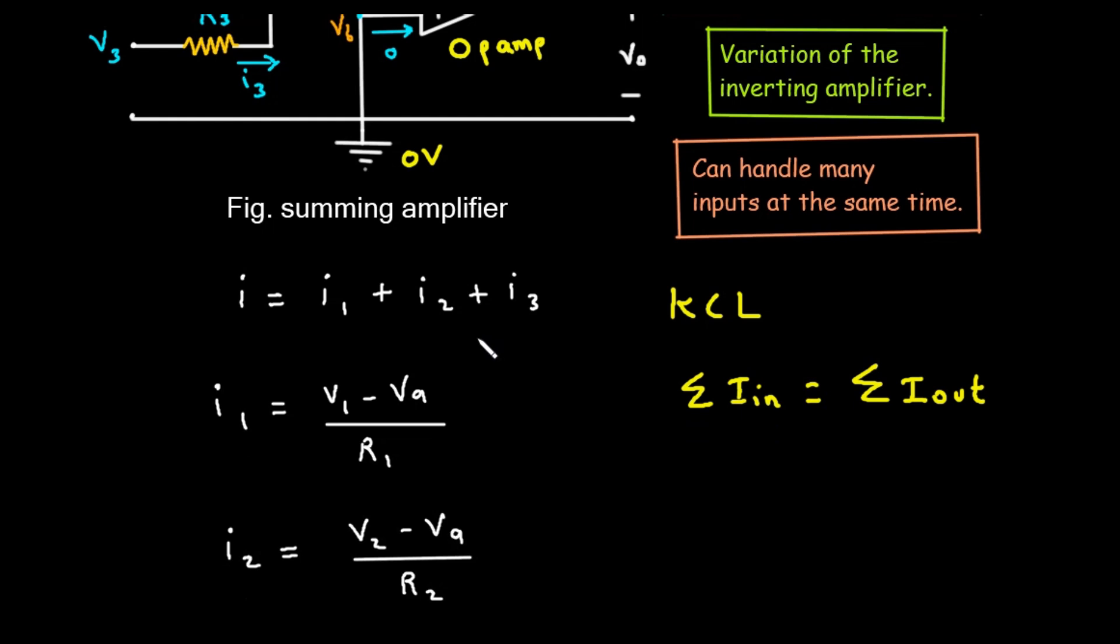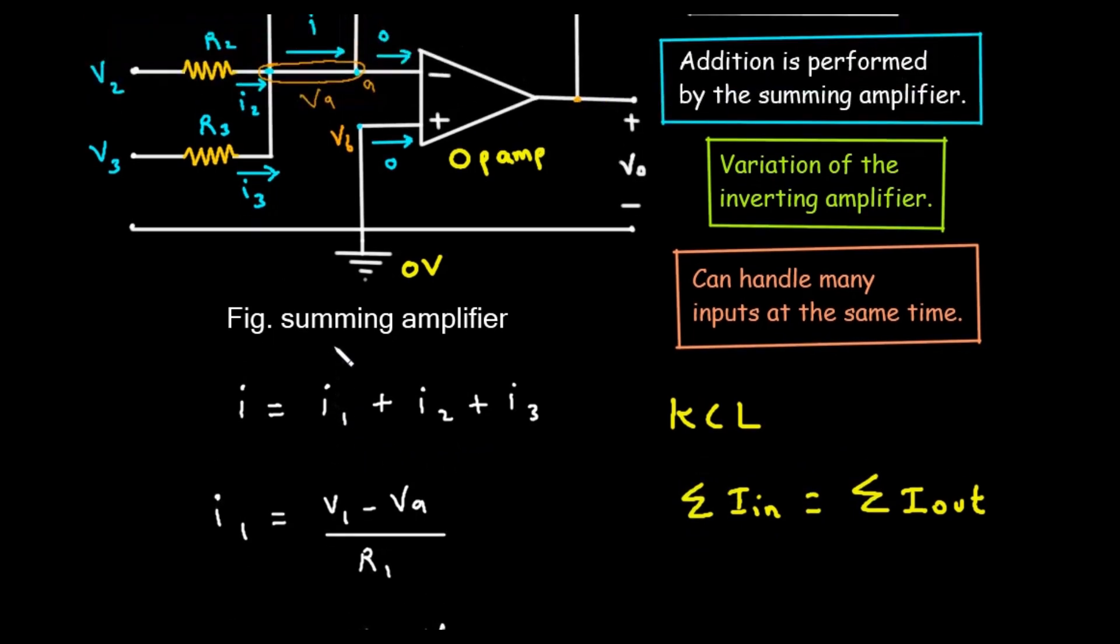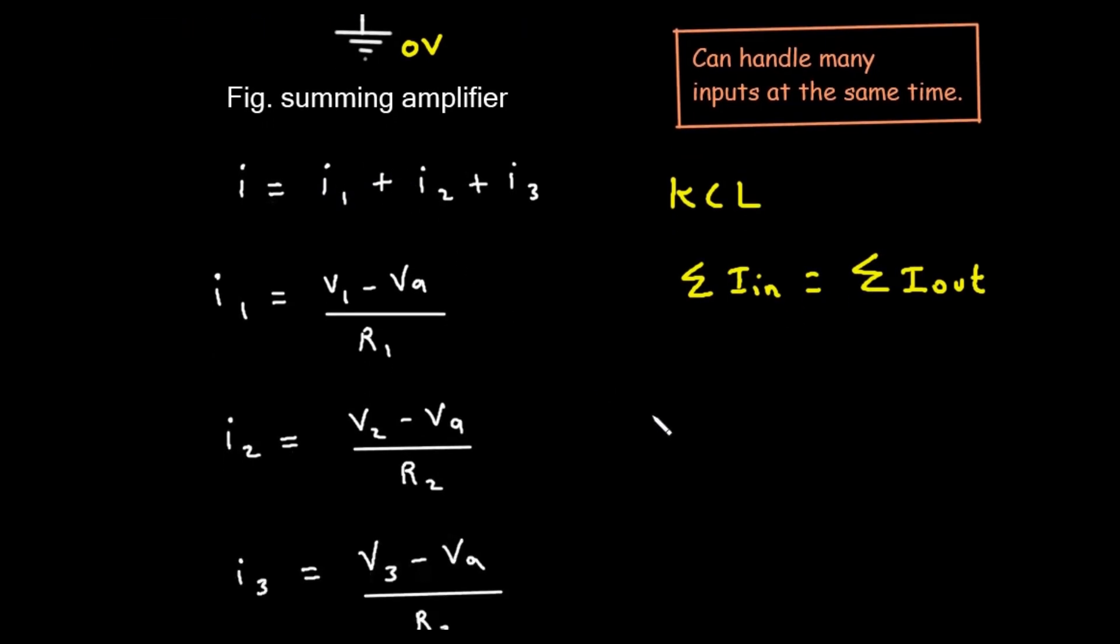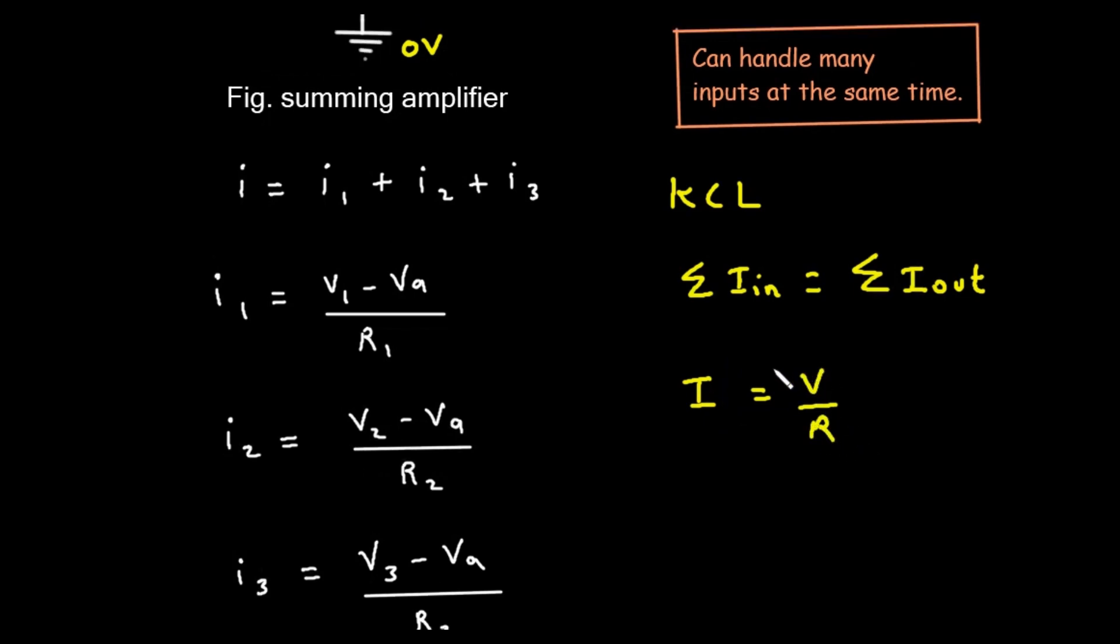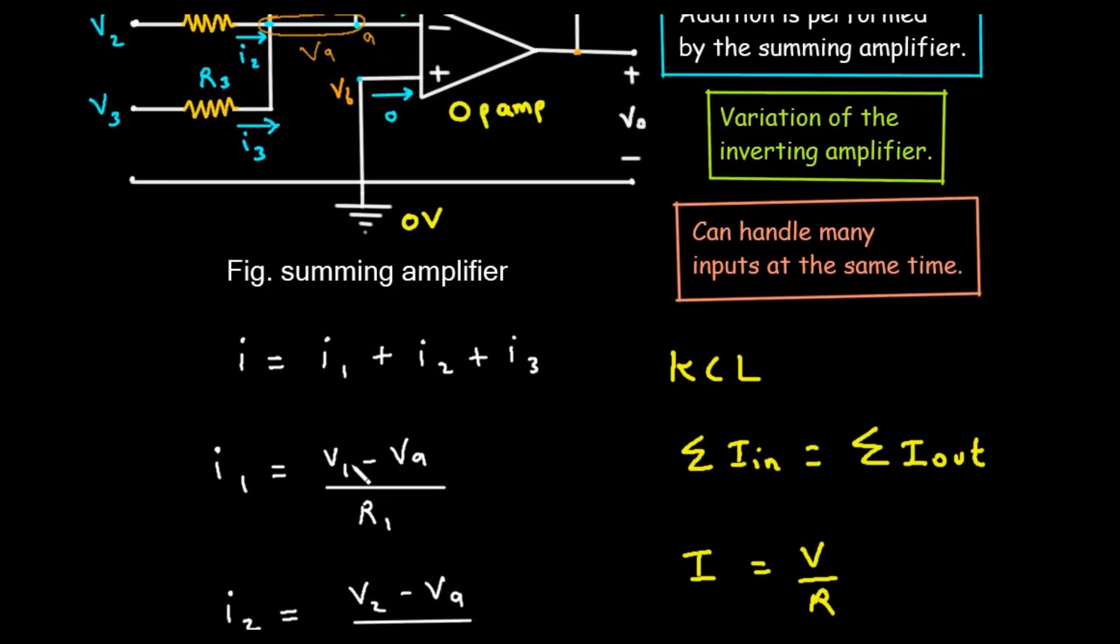Okay, that's the relationship between the currents. But what are the currents themselves? To find that, we use another fundamental law, Ohm's Law. Ohm's Law states that current through a resistor equals the voltage difference across it divided by the resistance.